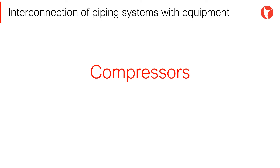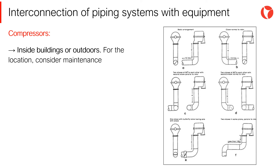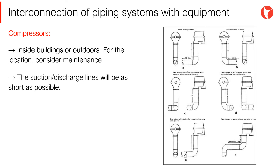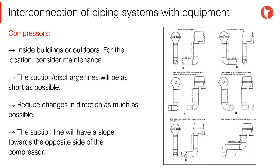The interconnection of compressors is very complex, mainly due to the fact that they are very sensitive to loads and changes in the boundary conditions. An inadequate design results in equipment failure and outage in a very short period of time. Generally, compressors can be located inside buildings or outdoors, depending mainly on maintenance requirements. The compressor suction and discharge lines should be as short as possible, with the least amount of direction changes. The suction line will slope towards the opposite side to the compressor.